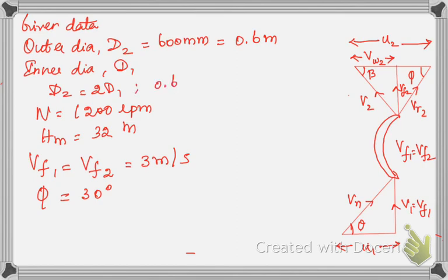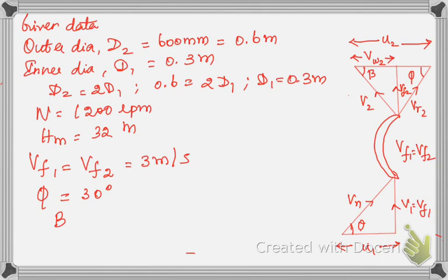From 0.6 = 2 × d1, we get d1 = 0.3 m. The width at the outlet is b2 = 50 mm, which converts to 0.05 m. We have now written all the given data.